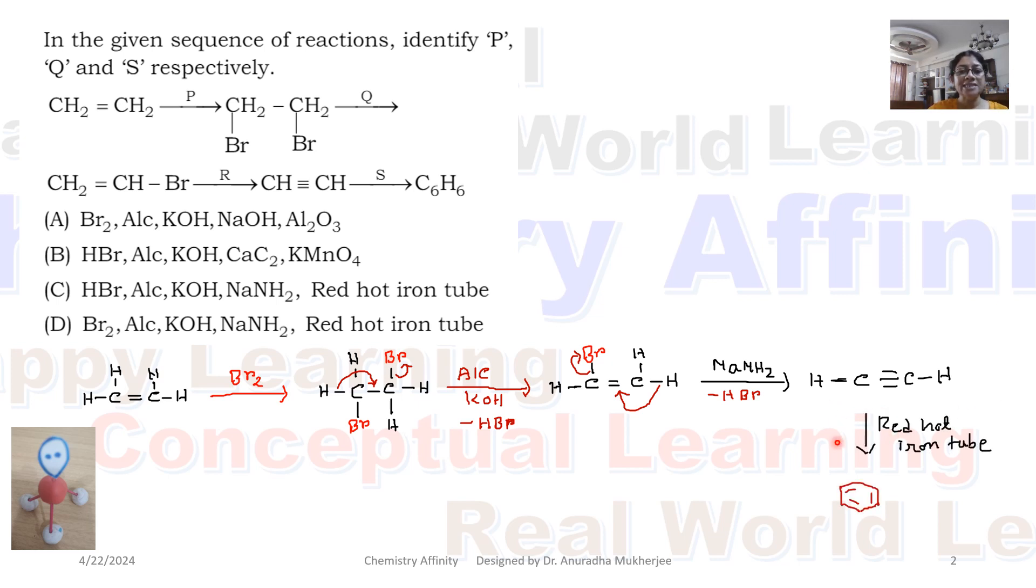When acetylene is passed over red hot iron tube, we get benzene. That means correct option is D where P is bromine, Q is alcoholic KOH, R is sodamide NaNH2 and S is red hot iron tube.